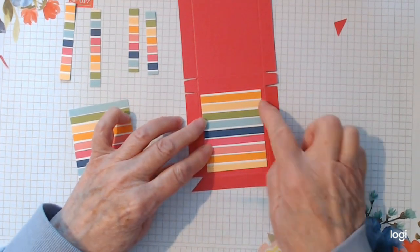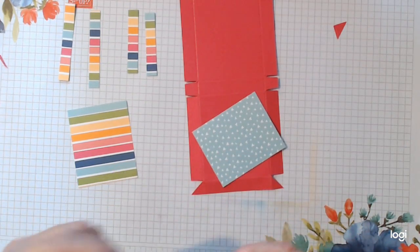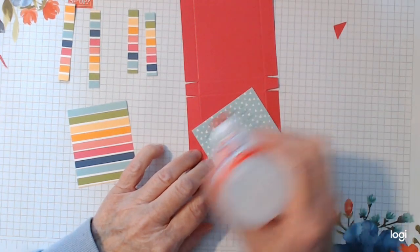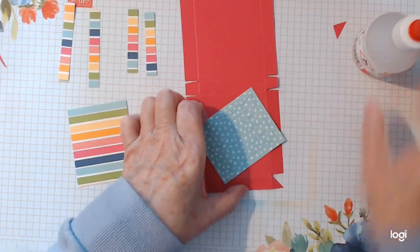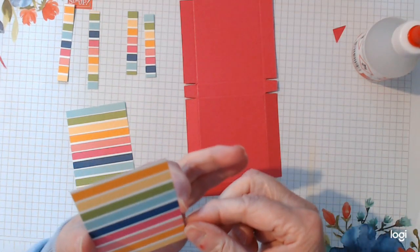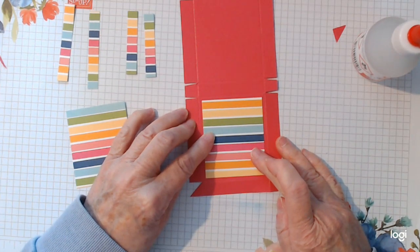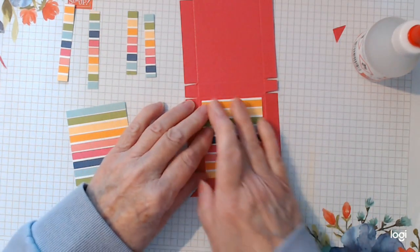I've made it so you've got a nice wee rim the whole way around. And you just need to add a bit of glue. And just centre it. It's easier to do it when it's nice and flat. And when your box is actually made.